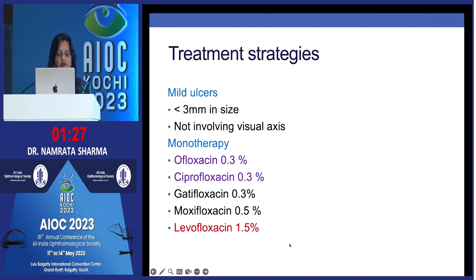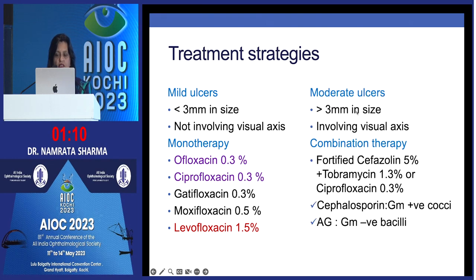Treatment strategies are fairly straightforward. For mild ulcers less than 3mm not involving the visual axis, monotherapy is used — ofloxacin, ciprofloxacin, gatifloxacin, moxifloxacin, or more recently levofloxacin 1.5%. For moderate ulcers more than 3mm involving the visual axis, combination therapy is needed: cefazolin 5% fortified with tobramycin 1.3%, or with ciprofloxacin 0.3%, to cover both gram-positive and gram-negative organisms.